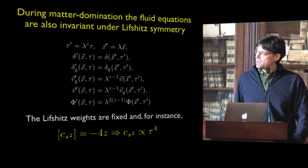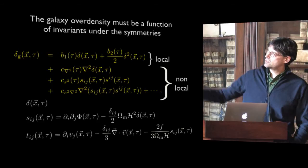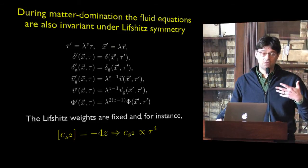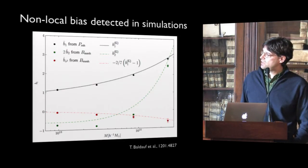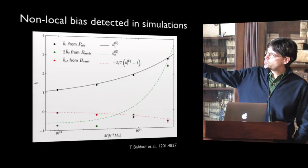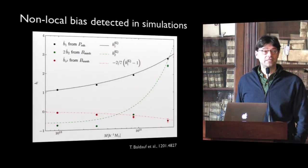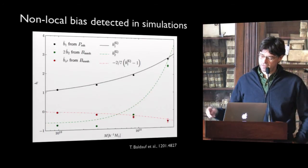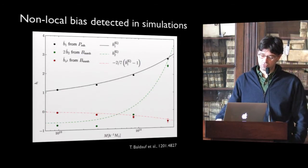Moreover, using the Lifshitz symmetry I mentioned at the beginning, you can also predict the time behavior of these non-local bias terms. So by symmetry alone you can not only establish they are there but also say how they behave as a function of time. This non-local bias has been detected in simulations: for instance, the red curve shows the appearance of one of those non-local pieces as predicted by symmetry arguments, and not only is it there but also the time dependence is correct. By symmetry arguments alone you can get two birds with one stone.